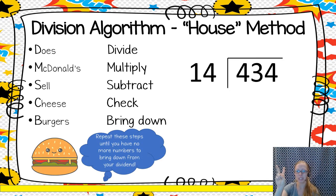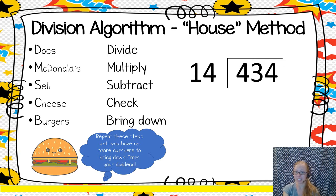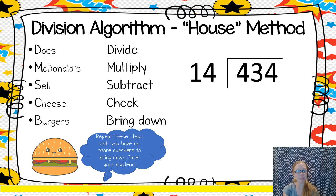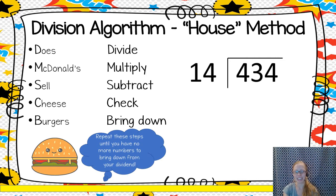I'm going to show you two strategies you can use to divide, starting with the division algorithm. Remember, algorithm means the series of steps. Some people call this the house method. There is a silly phrase on this screen that helps me remember the steps for a division problem. That phrase is: Does McDonald's sell cheeseburgers? The first letter of that phrase helps me remember all the steps I need to take.